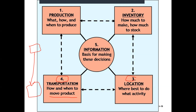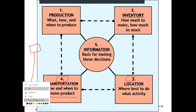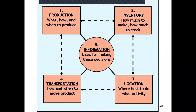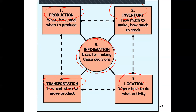In short, the drivers of supply chain are: production, inventory, location, transportation, and information. Information is central because for all four other drivers you need information to decide what to do and what not to do. These are the basic drivers of supply chain management.